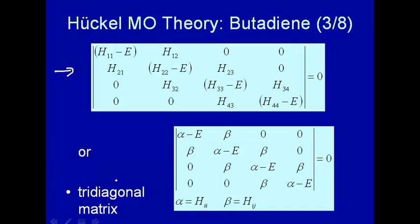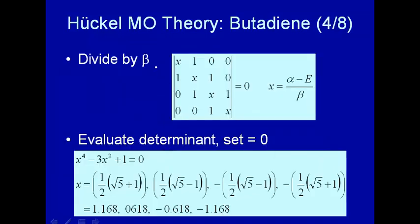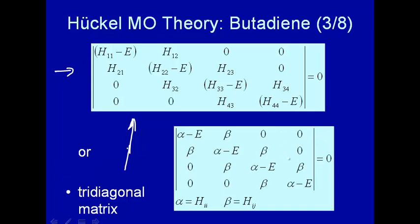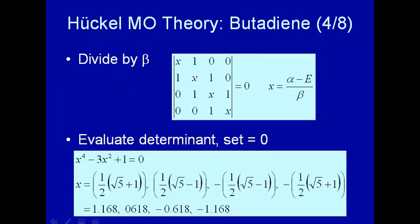This is a tridiagonal determinant from a tridiagonal matrix. What we have now is just to solve for the determinant and figure out what it is — we'll get a polynomial in E. Let's make one more approximation: divide the expression by beta, so everything in the determinant is divided by beta. This term will be one, and this will be alpha minus E over beta, which we'll call X. So this is our tridiagonal matrix where X equals alpha minus E over beta — a little simpler notation, same determinant.